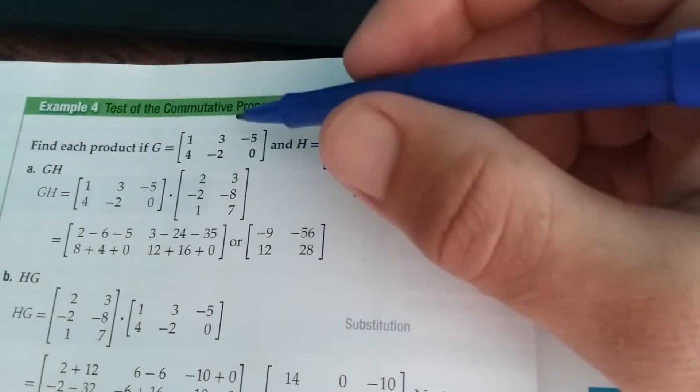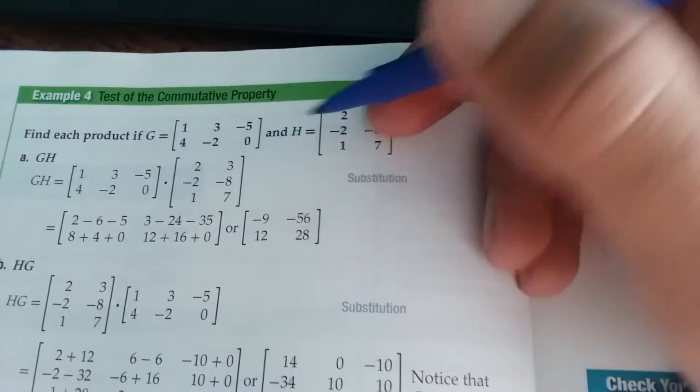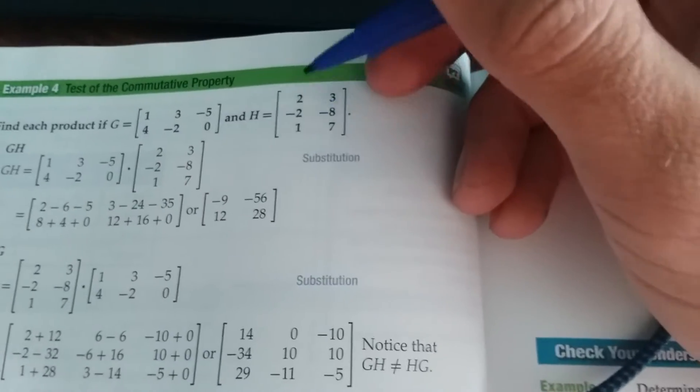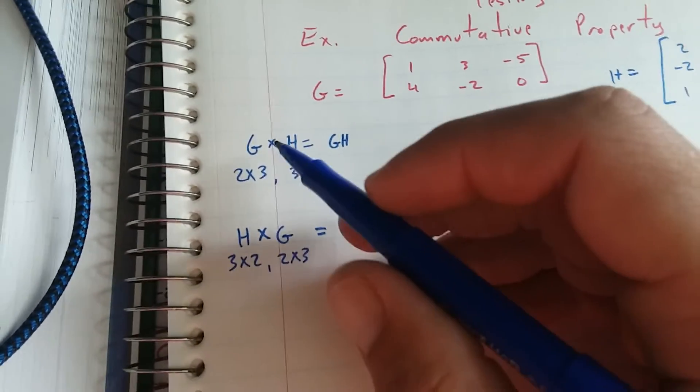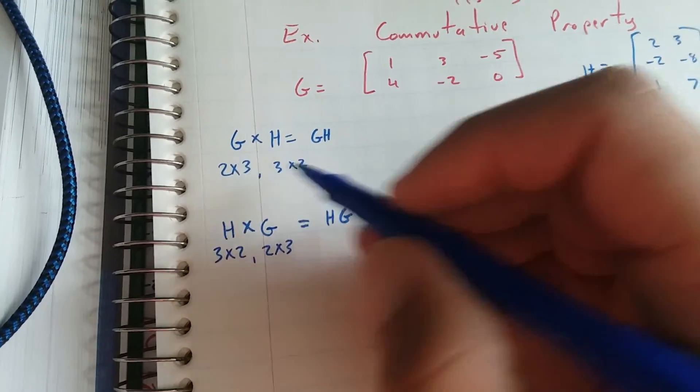So notice right away that G is a 2 by 3 and H is a 3 by 2. So when we find the products, GH is going to be a 2 by 2.